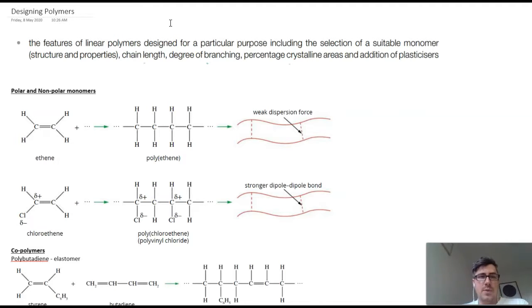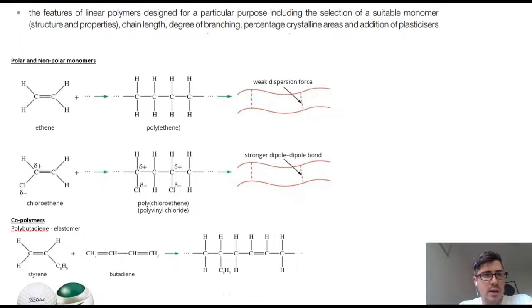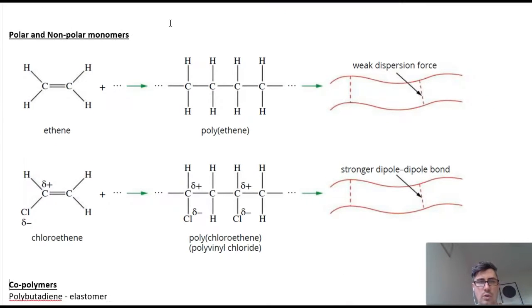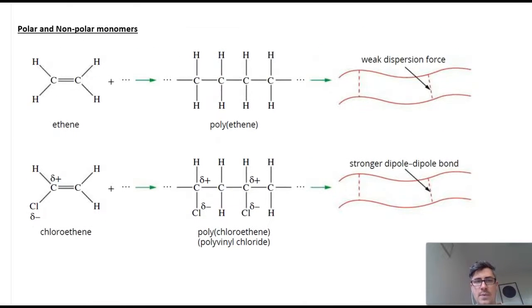The first one we're going to look at here is showing polar and non-polar monomers. So if we look here at these two monomers, we've got ethene and we've got chloroethene. Now you'll remember from chapter seven that chloroethene has a difference in electronegativity on the chlorine and the carbon here, so this creates a polar bond which we've shown with these little delta negative and delta positive signs. And that means that when they polymerize to make polychloroethene, which is also known as polyvinyl chloride or PVC, we have these polar bonds and that creates dipole-dipole bonds between the chains, the polymer chains, which you can see in this diagram.